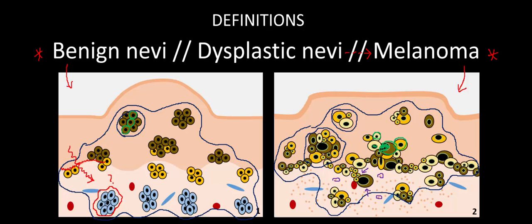Starting with nevi: recall that melanocytes are derived from neural crest cells, which migrate from below the epidermis through the dermis to the dermal-epidermal junction. It's believed that nevi arise due to aberrant migration somewhere along this pathway. So if these melanocytes got stuck in the dermis, dermal-epidermal junction, or even up in the epidermis, they could form clusters in each of those layers and form these benign pigmented lesions.